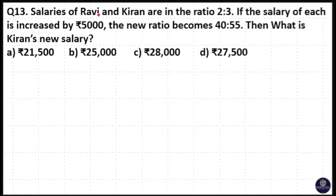Salaries of Ravi and Kiran are in the ratio 2 is to 3. If the salaries of each increased by 5000, new ratio becomes 40 is to 55. Then what is Kiran's new salary?